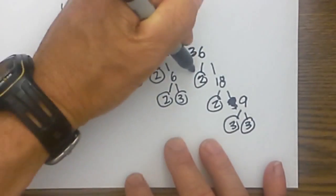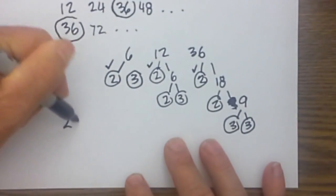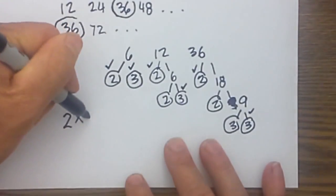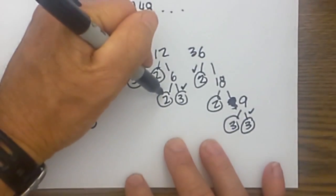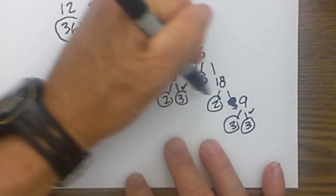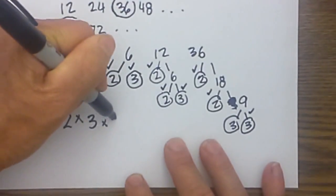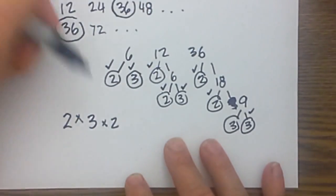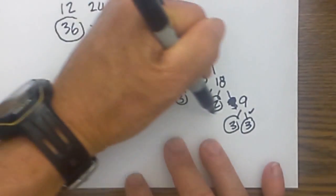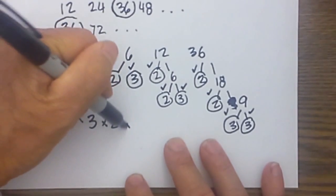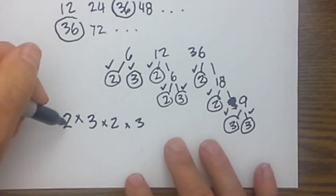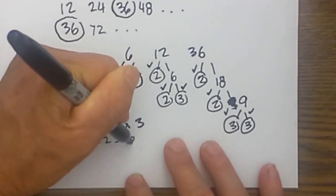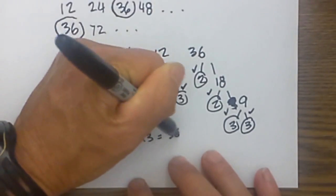I then look for any duplicate numbers. And 2 is duplicate in the middle so I will write a 2. 3 is duplicate in all 3 so I will write a 3. 2 is duplicate again in 12 and 36 so I will write a 2. And finally I have left over a 3 down here times 3. When I multiply these together 2 times 3 is 6, 6 times 2 is 12 and 12 times 3 is 36.